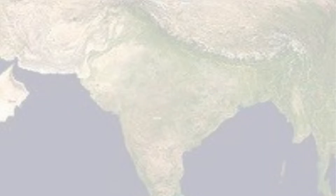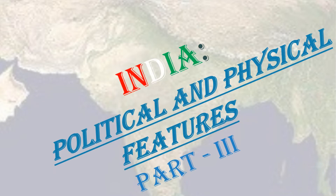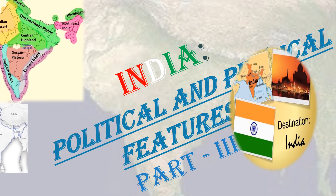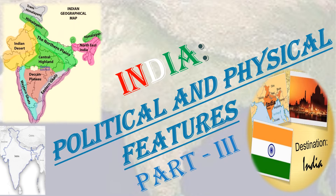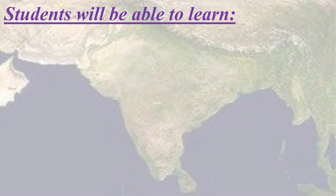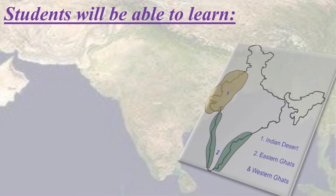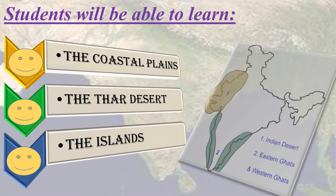Dear learners, this is the third part of a three-part series on India's political and physical features. The first and second part of the series are linked in the description box. Please watch the video till the end. In this module, you will learn about the coastal plains, ghats, Thar desert, and islands in general.